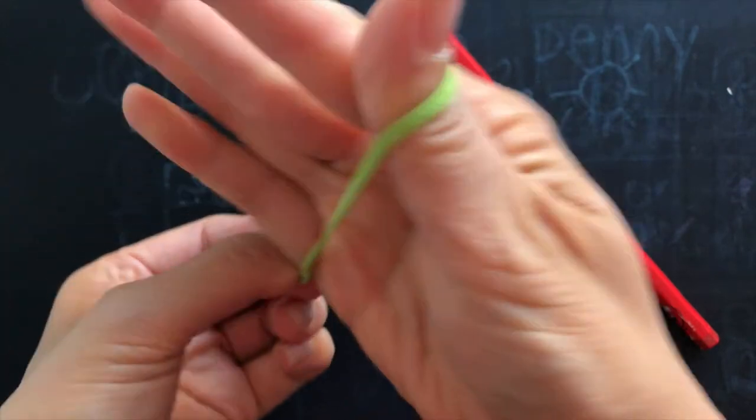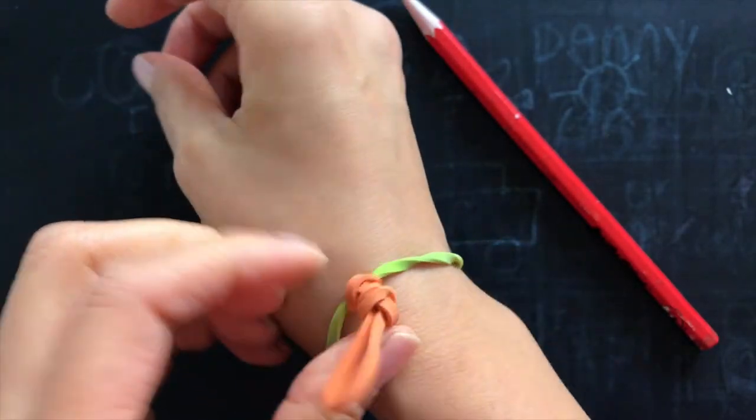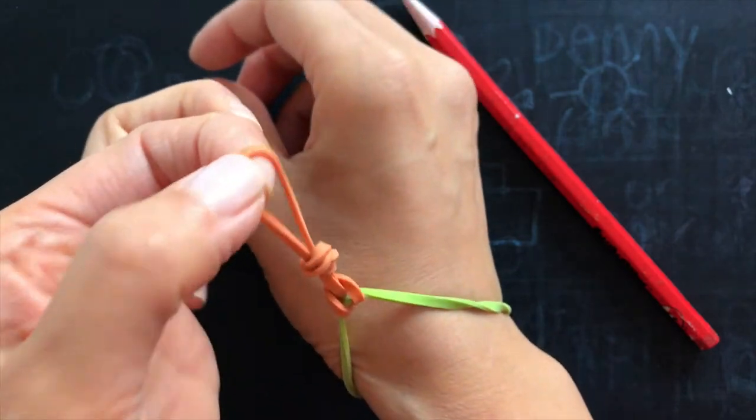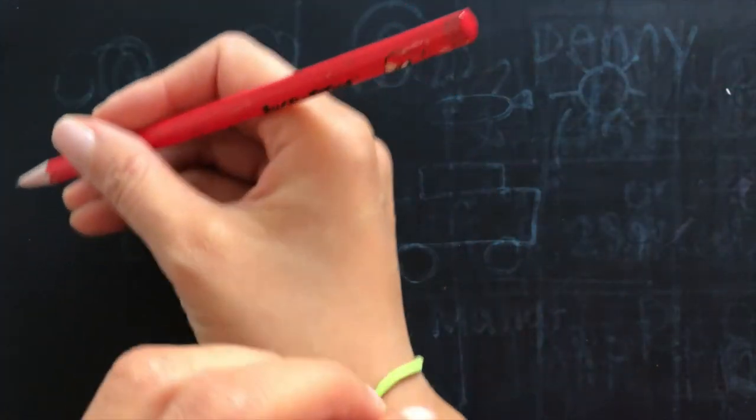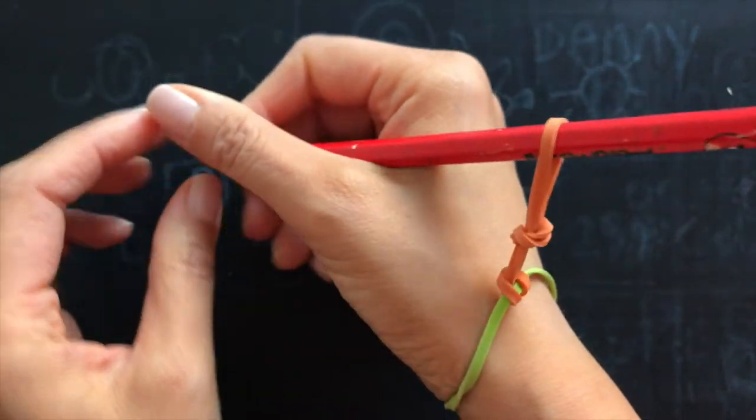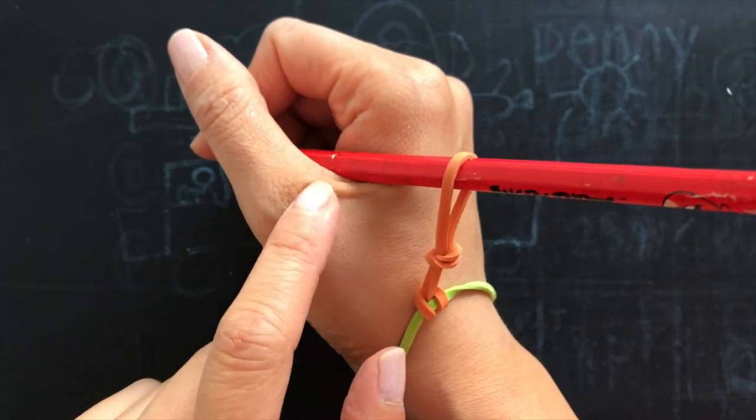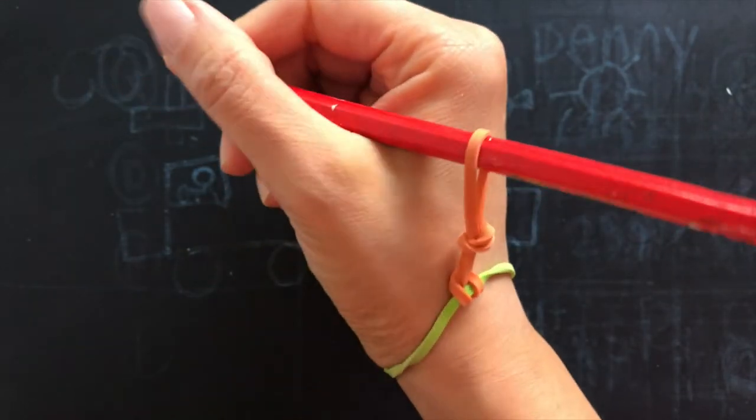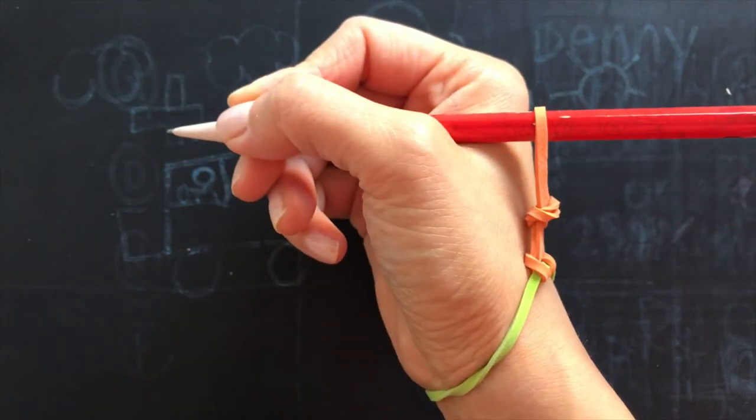So you put your wrist in, and this loop will hold the pencil, and it will pull the pencil back to the wrap space over here. This is it.